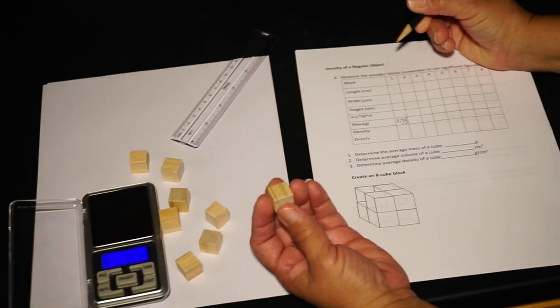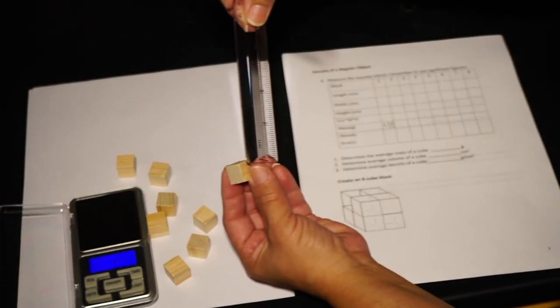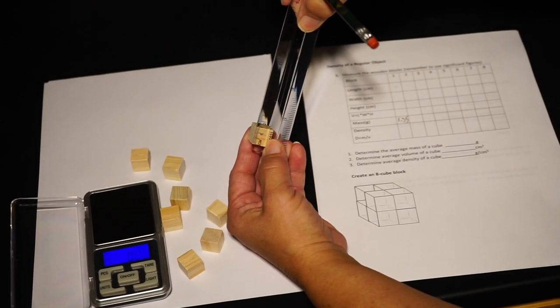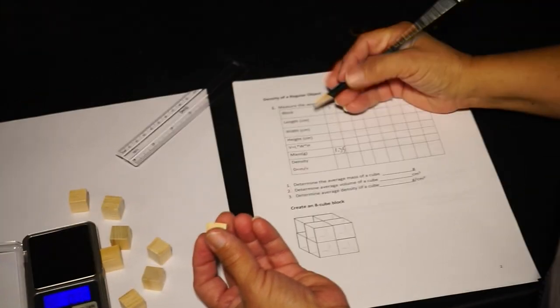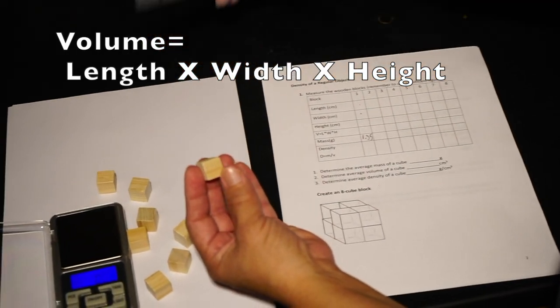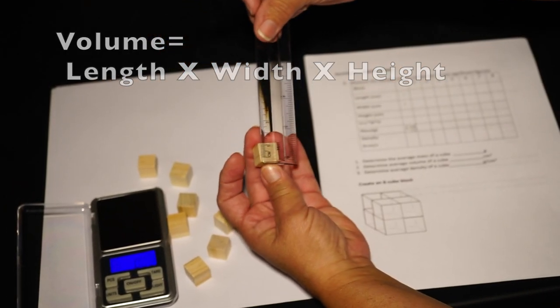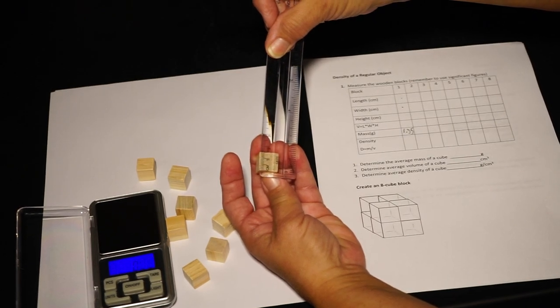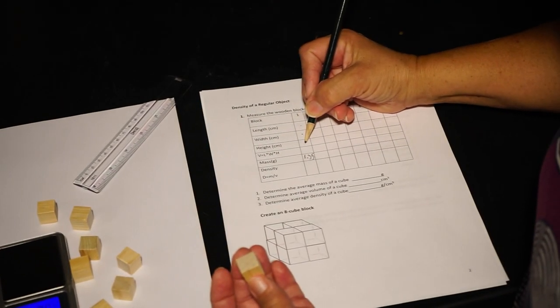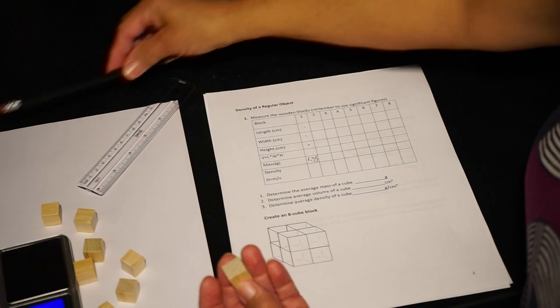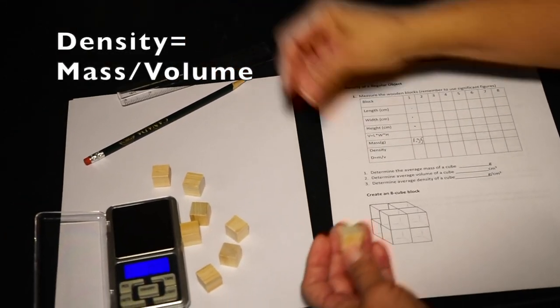Repeat this for all eight blocks. It can help to label each block one through eight to keep track of them. Then you'll calculate the volume of each block. To do this, just multiply the block's length times its width times its height. Do this for each of the eight blocks.